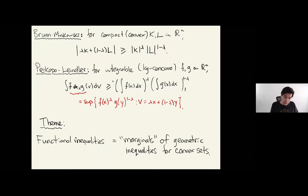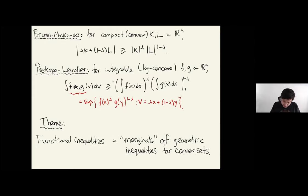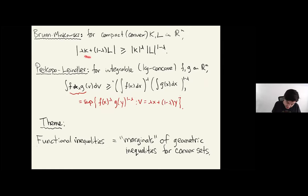A functional version of this inequality is the Prékopa-Leindler inequality, which I'll formulate with two functions. I'll write it in terms of what I'll denote by star — the supremal convolution — which is the sup of such an expression where the argument is decomposed as a combination in terms of X and Y. If the integrand satisfies this inequality, then the integrals themselves satisfy a similar inequality. This is an extension of the Brunn-Minkowski inequality: if I take indicator functions of convex bodies K and L, what I write here is the indicator of the Minkowski sum.